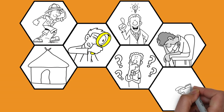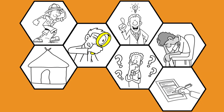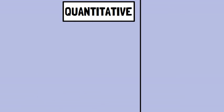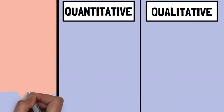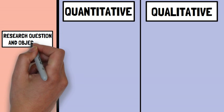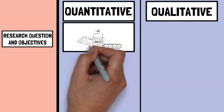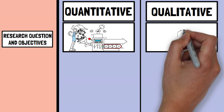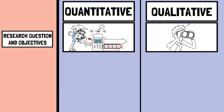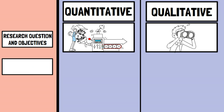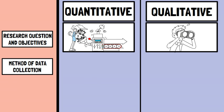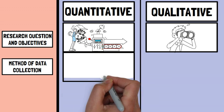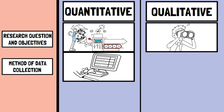There are a few key differences between quantitative and qualitative research methods. Firstly, the research question and objectives differ. Quantitative research is concerned with answering specific questions using numerical data, whereas qualitative research is interested in exploring complex phenomena in detail. Secondly, the methods of data collection and analysis differ. Quantitative research collects numerical data using controlled methods and analyzes it using statistical software.